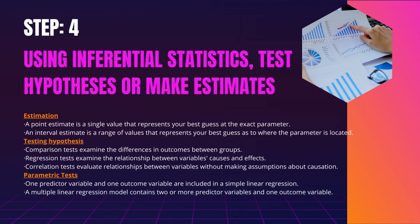A confidence interval conveys where you generally expect to find the population parameter most of the time by using the standard error and the z-score from the standard normal distribution. Testing Hypotheses. You can test hypotheses about relationships between variables in the population using data from a sample. Hypothesis testing begins with the assumption that the null hypothesis is true in the population, and statistical tests are used to determine whether or not the null hypothesis can be rejected. Statistical tests determine where your sample data would fall on a sample data expected distribution if the null hypothesis were true. These tests produce two main results: a test statistic indicates how much your data differs from the null hypothesis, and a p-value indicates the probability of obtaining your results if the null hypothesis is true in the population.